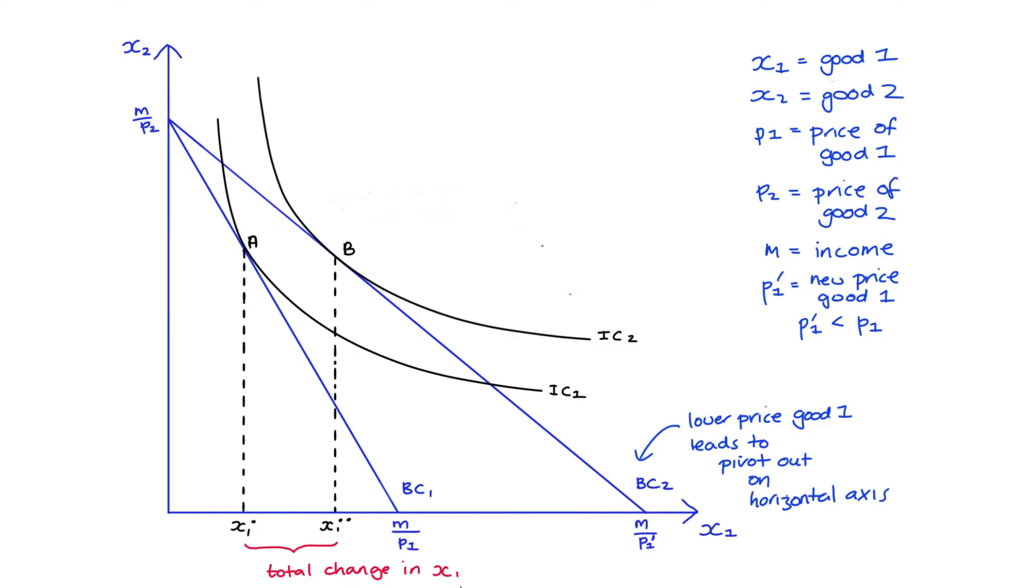The first part I'm going to call the income effect. The income effect occurs because the price change leads to a change in our real income. Now what I mean by real income is the purchasing power of our income. Since good one is now cheaper my income can now go further. I can buy more of good one, more of good two, or more of both depending on my preferences. That the price of good one has decreased means that my real income has increased. The change in consumption of good one that is brought about because of the change in real income is called the income effect.